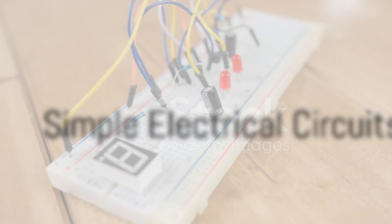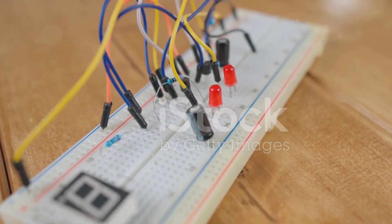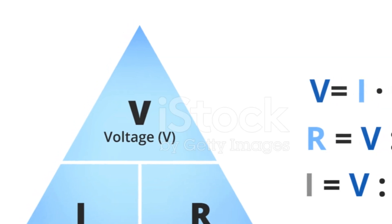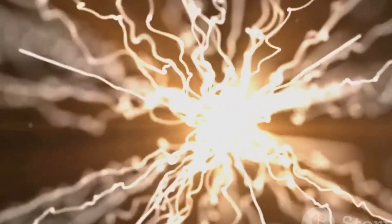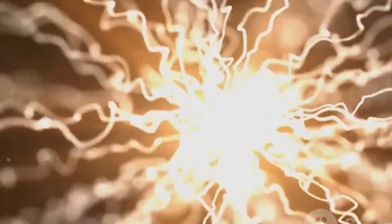In the realm of simple electrical circuits, we deal with components like batteries, wires, resistors and bulbs. Ohm's law governs this universe, stating that the current through a conductor between two points is directly proportional to the voltage across the two points.